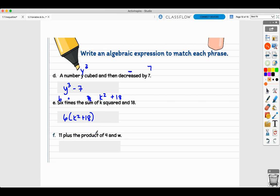11 plus the product of four and W. 11 plus the product of these two. Product means multiplying, so four times W. You could write 11 plus four times W. You could use any one of those product things. 11 plus 4W, or 11 plus four parentheses W. These are the three ways that you would do this.